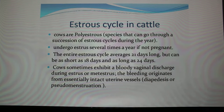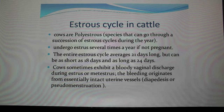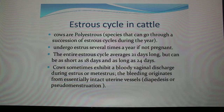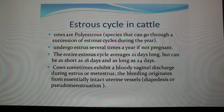Cows are polyestrous — they cycle all the time through a number of successions during the year. One slide says they 'undergo estrus several times a year,' but I don't like that phrase because it's every 21 days — that's 15 or 16 estrous cycles. There's a big take-home here: if you can look at the discharges coming out of the vagina and on the vulva, you can determine if that's normal or abnormal. There is a bloody discharge, but it's not during estrus — estrus discharge is clear.